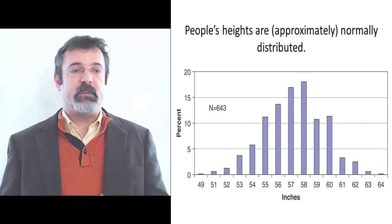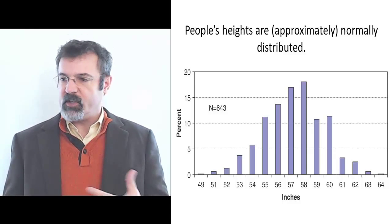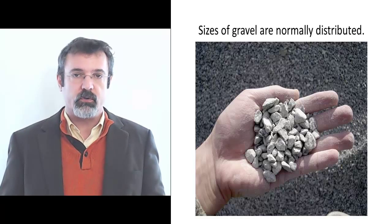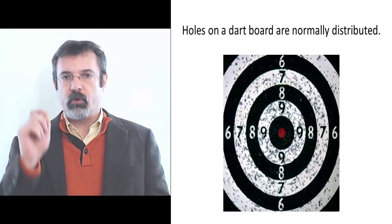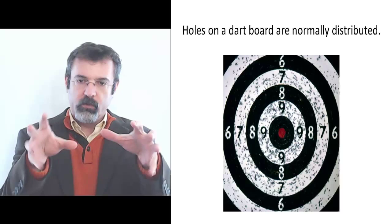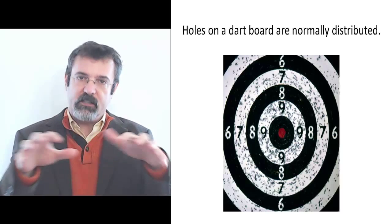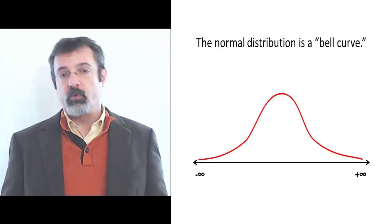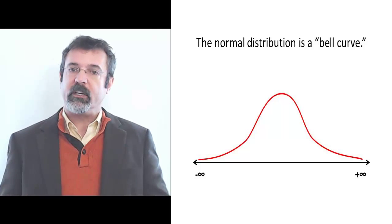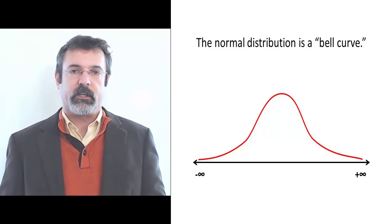People's heights tend to be normally distributed. The sizes of gravel tend to be normally distributed. When you throw darts at a dartboard, the holes end up being normally distributed. So the normal distribution is useful because it describes so many processes that occur naturally.